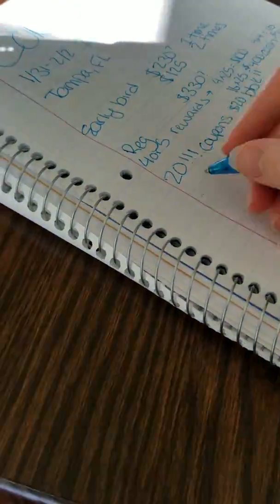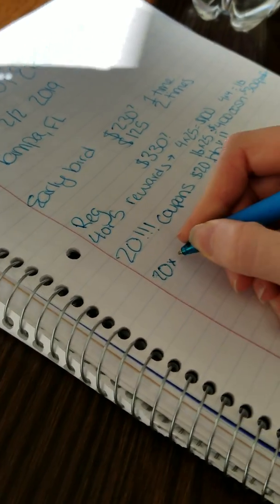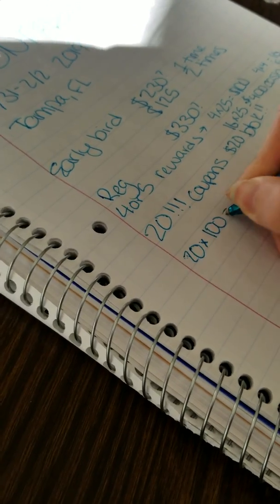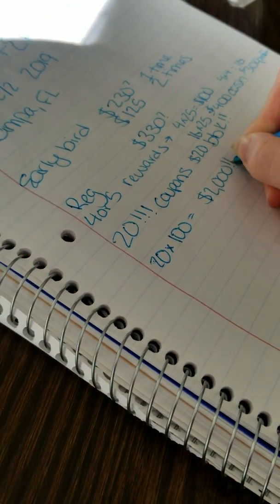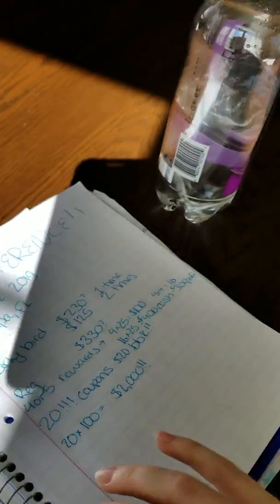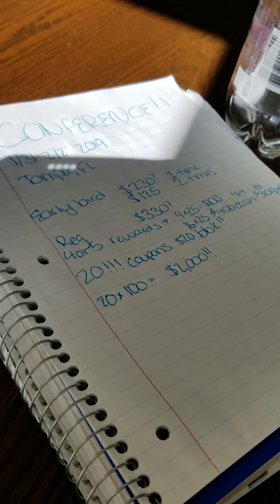So every one of those distributors, 20, it's a $100 bonus you can earn. So 20 times 100, that is $2,000 in fast start bonuses, not to mention the commission, not to mention the promotions.